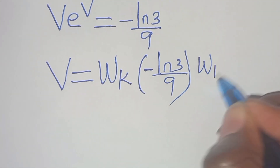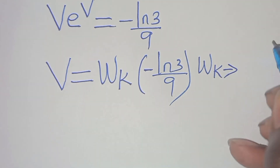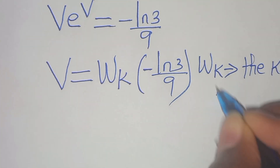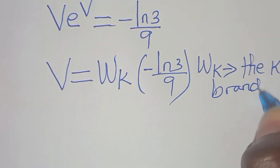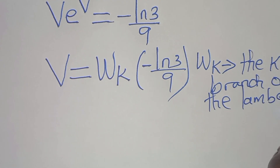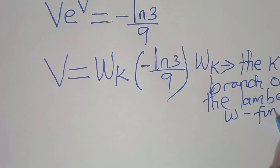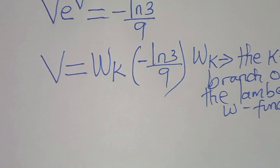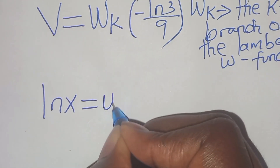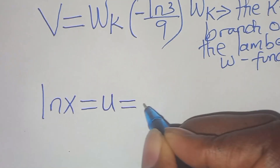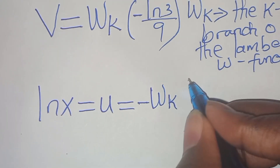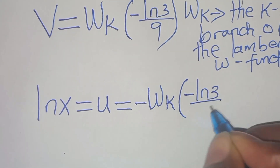This W subscript k is the kth branch of the Lambert W function. So now, ln(x) equals u, which equals minus W subscript k of (minus ln(3) over 9).